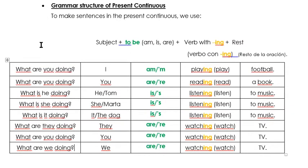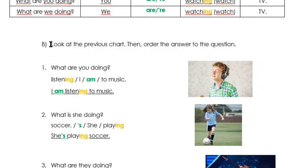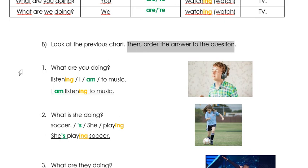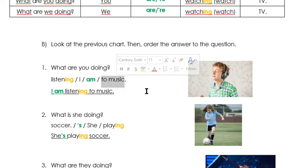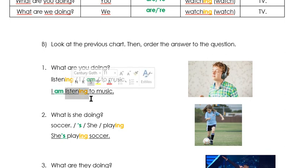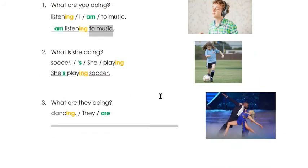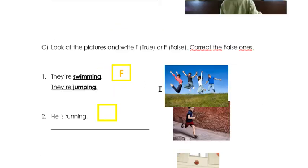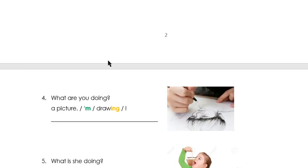Here you have Activity B. You have to look at the previous chart and then order the answers to the questions. Van a ordenar las respuestas para las siguientes preguntas. For example: What are you doing? — you have 'listening', 'I am', 'to music' — you have to order them: I (subject), am (verb to be), listening (verb with -ing), to music. Miren las imágenes y ordenan la oración. You have six questions. Pay attention to the contractions.